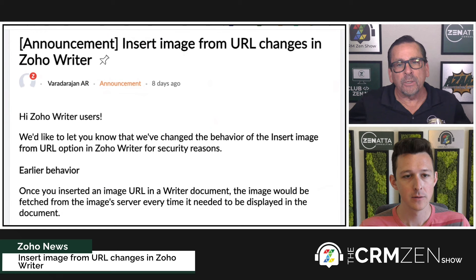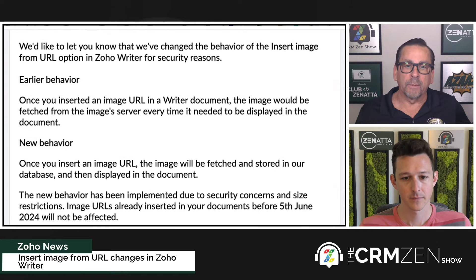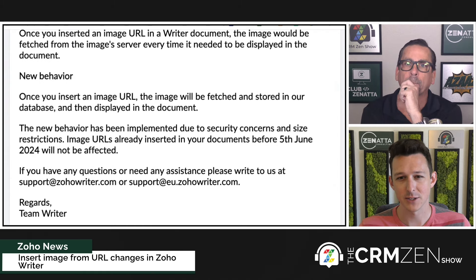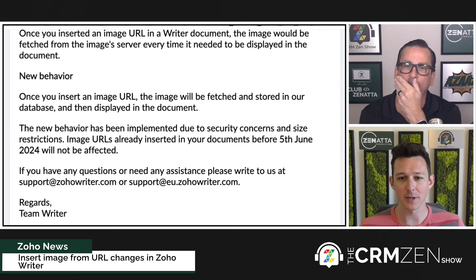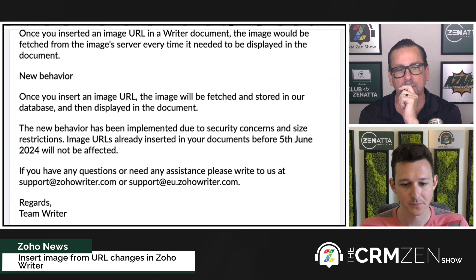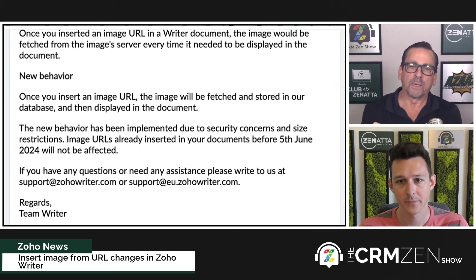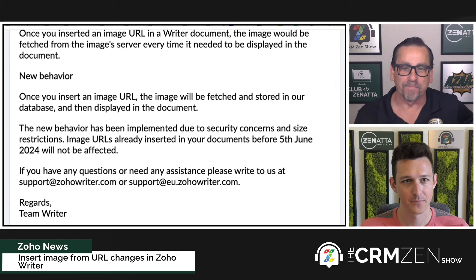Also in Zoho Writer, they are changing the way you insert images from URLs. It used to fetch the image again from the embedded URL every single time you opened the document. Now it fetches it the first time and stores it locally in the document. This is nice for load speed, but not great for things that change — like if you told a client to use a reference URL so that if the image changes it would be updated automatically. This won't happen now; you'd need to change the URL merge to refresh the image. This does not affect documents created before June 5th, 2024.